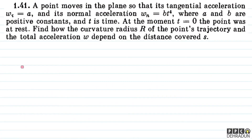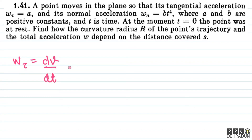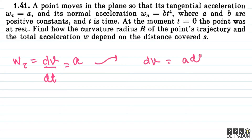So, w_τ which is tangential acceleration is nothing but the rate of change of speed. So this is dv/dt and we can say it equals a. So we can write dv = a dt.